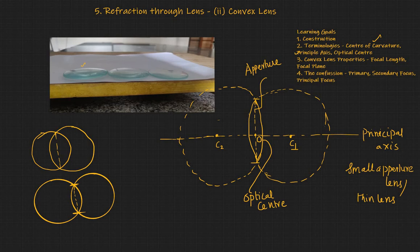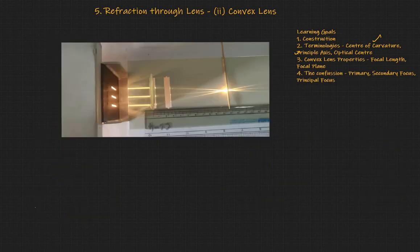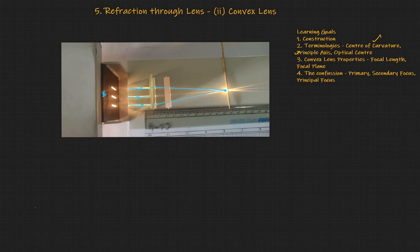Now let's deep dive into the convex lens — how it works and its properties. Here's a convex lens where you can see rays coming out of the ray box. This ray box can generate the rays. You can see that these rays are entering this lens, and we see these rays converge at the center. This center point is called the focal point.